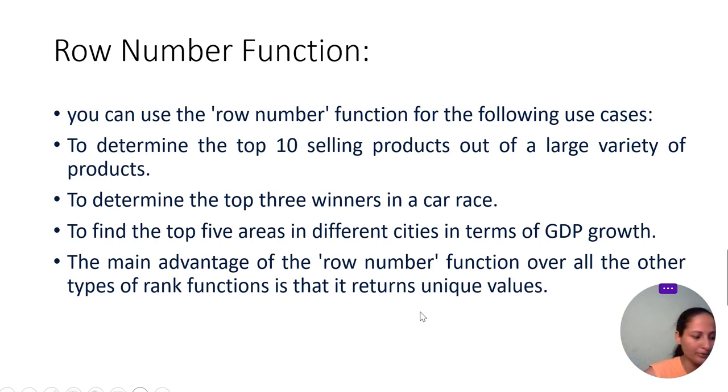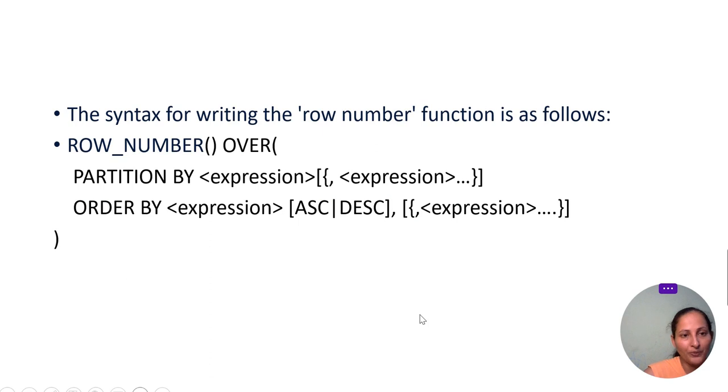What is the syntax? First, we need to go to the syntax of the row number function. Row number function has the same syntax as rank and dense rank, and it is similarly used: ROW_NUMBER OVER, PARTITION BY expression, and ORDER BY expression. So based on the approach, now we will go to the practical examples.